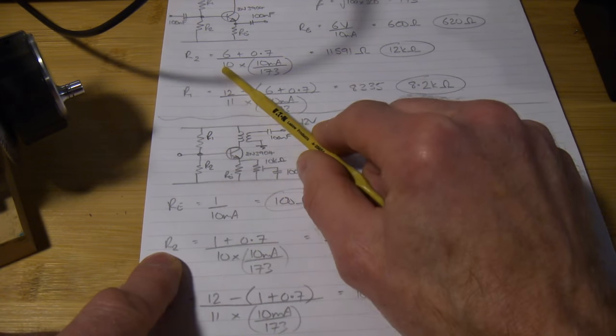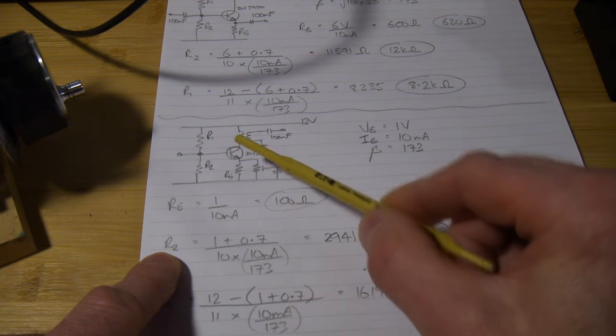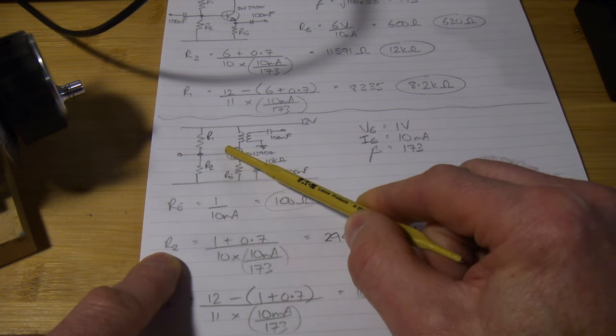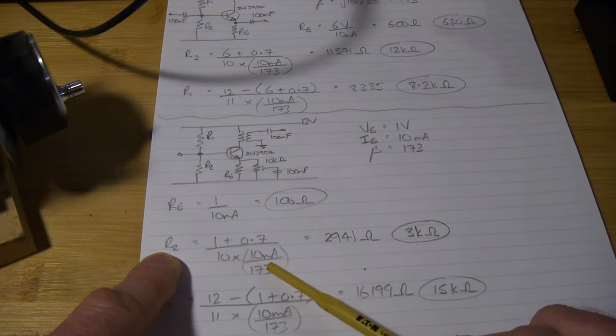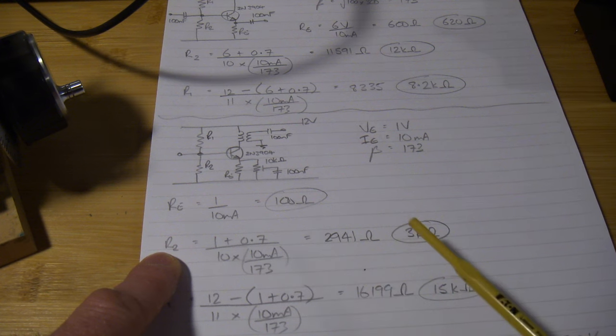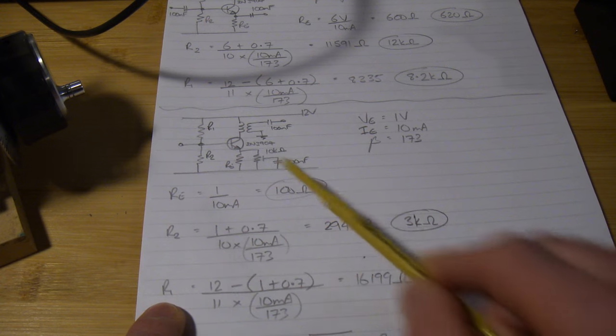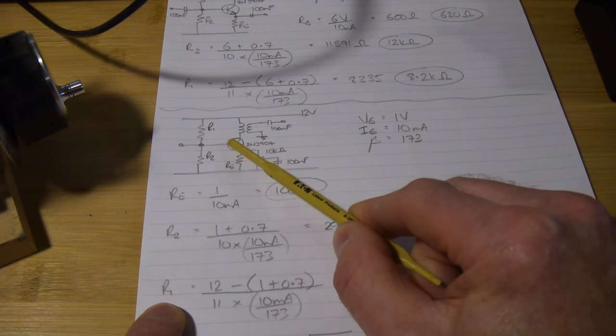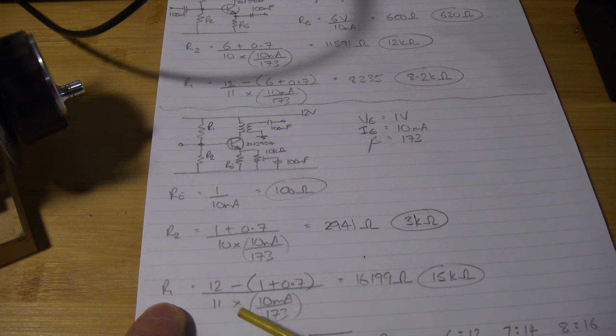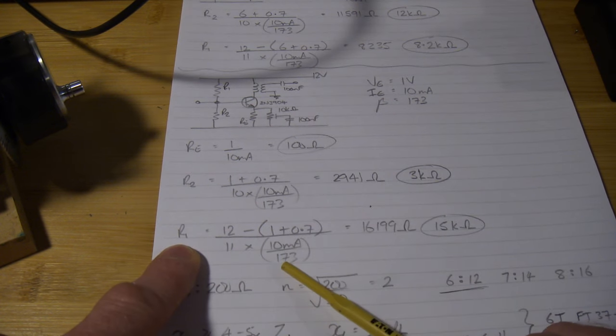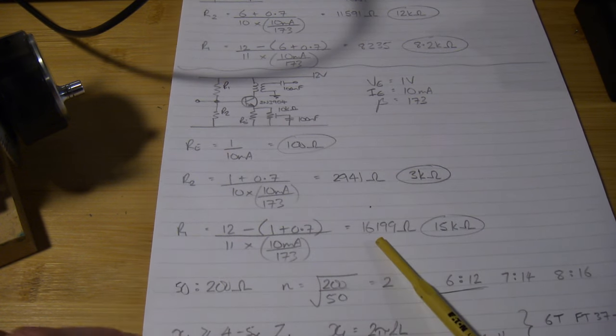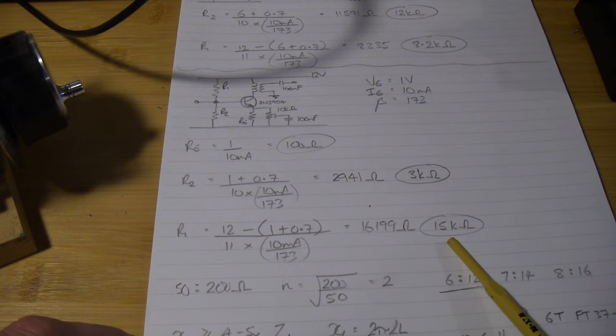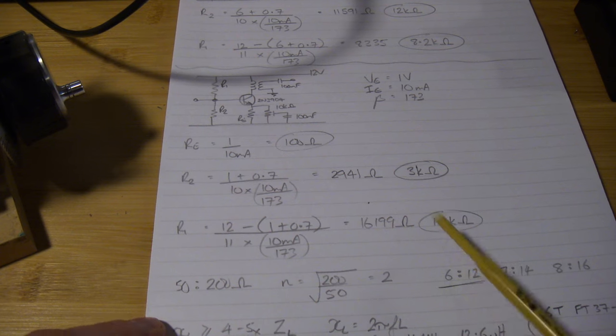R2, so exactly the same as the upper stage. In this particular case, it's going to be 1 volt plus 0.7 divided by 10 times the base current, gives me that, nearest standard value is 3k ohms. For R1, that top resistor, 12 volts minus 1.7 divided by 11 times the base current, gives me 16199, so I'm just going to use 15k ohms as the nearest standard value.